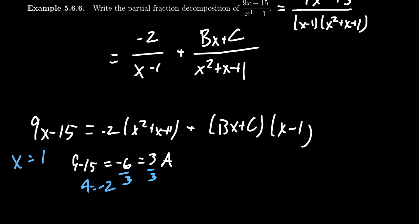So what do we do about the B or the C? Notice B is attached to x. If I were to plug in x equals 0, that would annihilate the B. It doesn't annihilate the A, but A is negative 2, I can live with that.